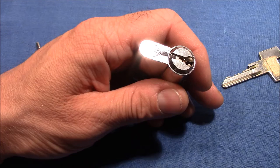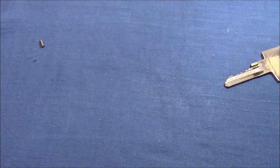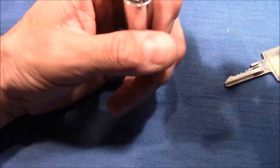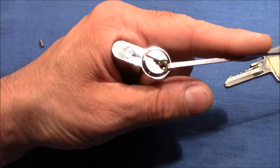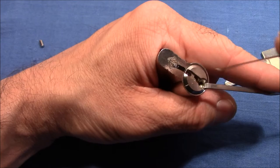Let's pick it. I've marked the neutral position of the plug with a black line to better visualize the rotation when we get a false set. So where is my tension wrench? Here it is. Apply tension and I use a Deforest half diamond to zip into a false set first and then I try to pick the spool. Let's start.